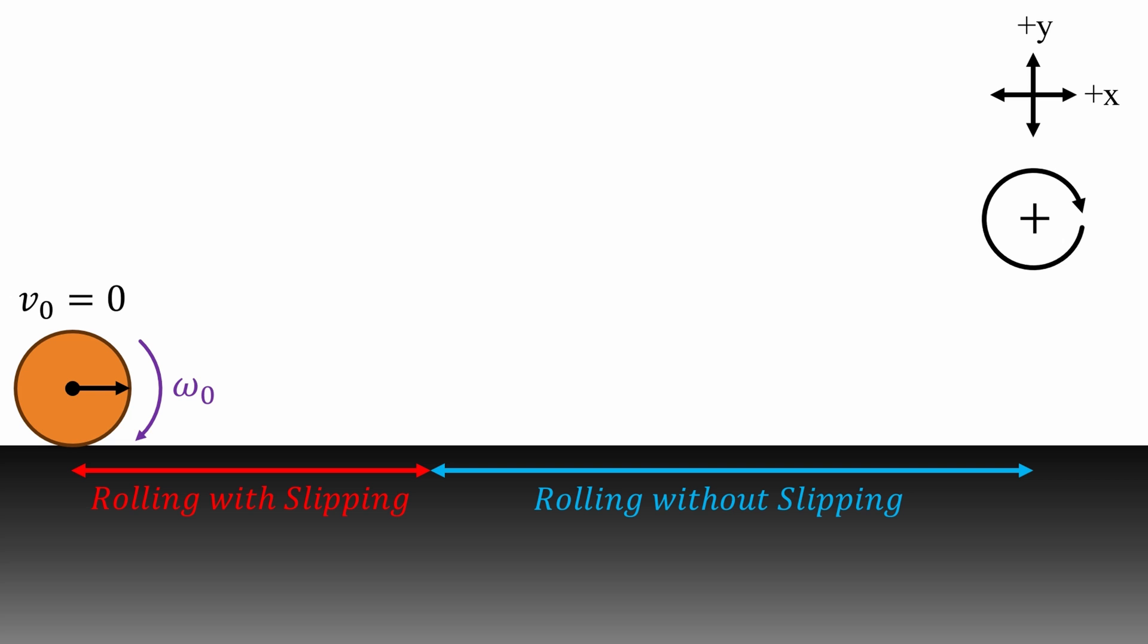Once we start the timer, that center of mass velocity will begin to increase, and the angular speed will begin to decrease. And once we reach these values, that's when rolling without slipping kicks in. So we're going to use this information to solve for that distance in red. And to get it, we'll need to figure out the amount of time in this interval.